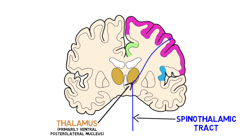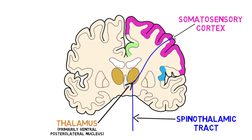There, they synapse on neurons that carry pain information to the cerebral cortex. The primary destination for these neurons is the somatosensory cortex, which is the main processing area for touch and pain sensations. Processing of pain information in the somatosensory cortex helps to identify the general aspects of pain, such as the location, intensity, and quality of pain.